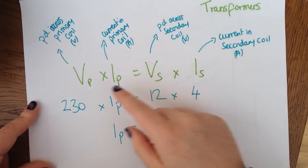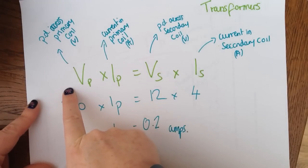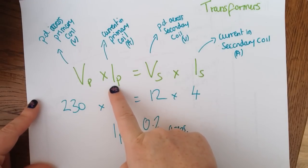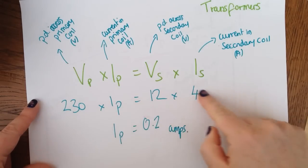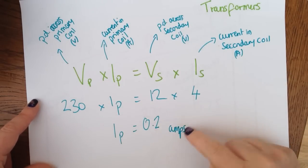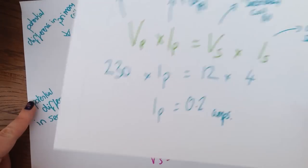So there are two equations you need to know for this. That's the potential difference across the primary coil times the current in the primary coil is equal to potential difference in the secondary coil times the current in the secondary coil. Plug your numbers into the equation, work it out, and don't forget to add your units on the end.